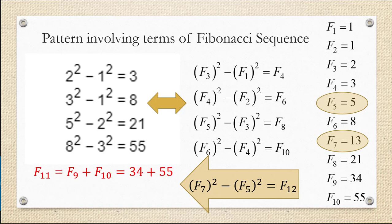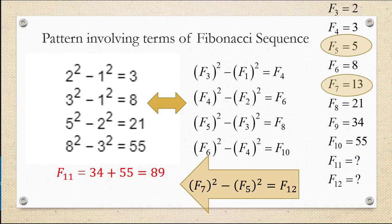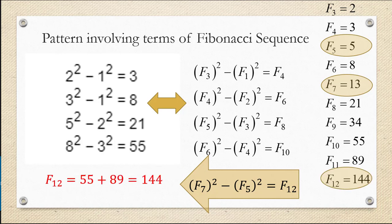So F sub 11 would be F sub 9 plus F sub 10, which is 34 plus 55. So that's going to give us 89 for F sub 11. Now F sub 12 is going to be F sub 10 plus F sub 11. The previous two terms summed is 55 plus 89, which is 144.